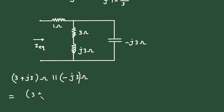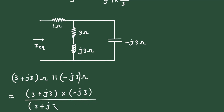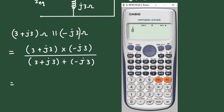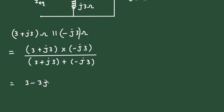Let's simplify this. The parallel combination of (3 + j3) and (-j3) equals (3 + j3) multiplied by (-j3), divided by (3 + j3 + (-j3)). Simplifying, this equals 3 minus 3j ohm.